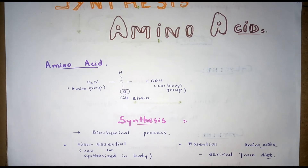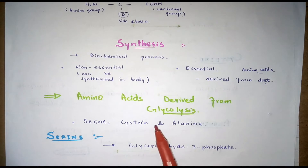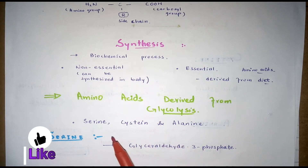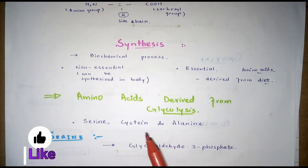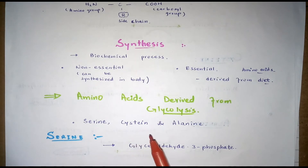The different ways by which amino acids can be produced are as follows. First, amino acids derived from the intermediates of glycolysis. These are serine, cysteine, glycine, and alanine. The glycolysis intermediates serve as the precursor molecules for these amino acids.